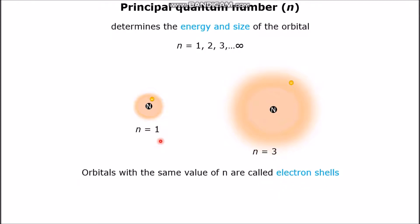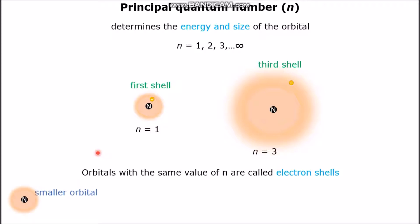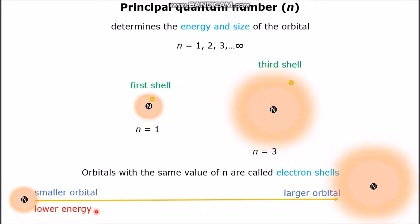So N equals 1 is the first shell, whereas N equals 3 is the third shell, and so forth. How do you associate a small or large orbital with energy? It turns out that a smaller orbital has lower energy, whereas a larger orbital has higher energy.